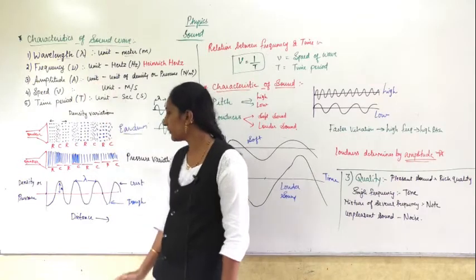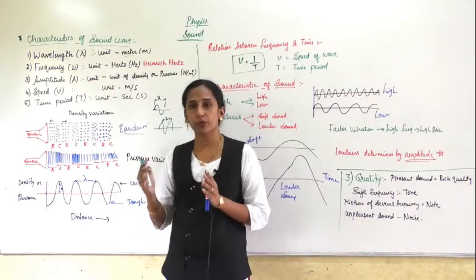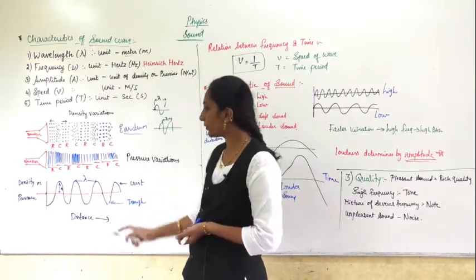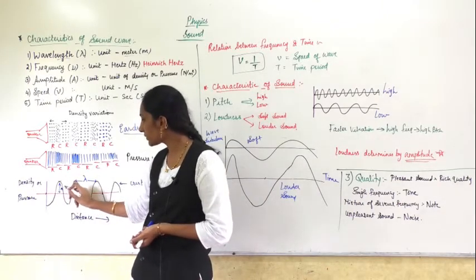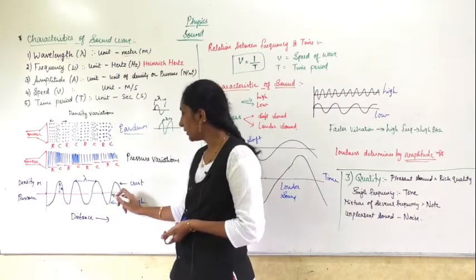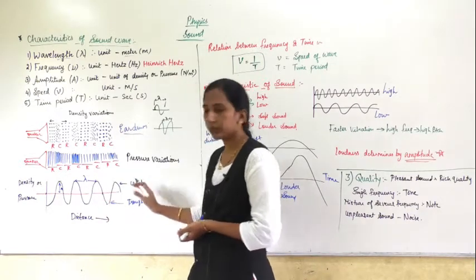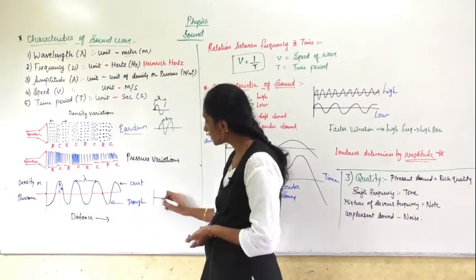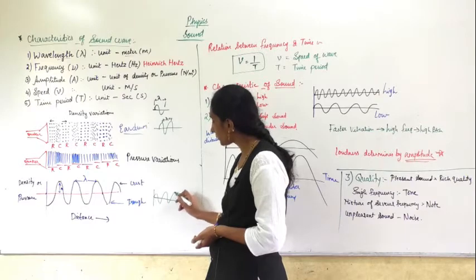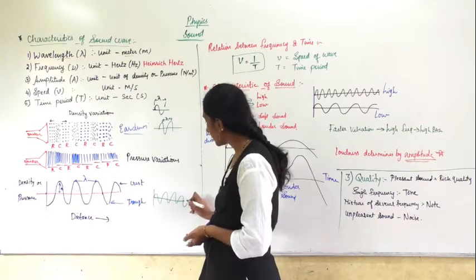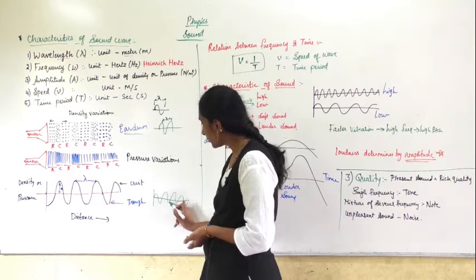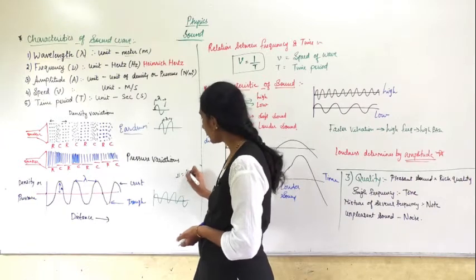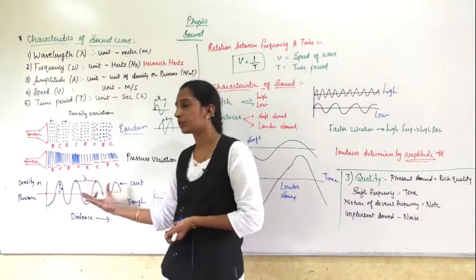The second term is frequency — how many waves are produced per unit time. For example, in one second, if you count the waves here: one, two, three, and one and a half makes four — the frequency is four. Frequency is simply how many waves are produced per unit time.